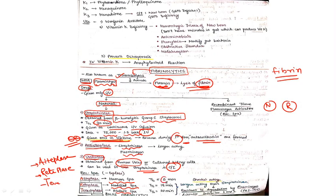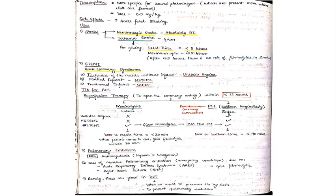Tenecteplase is more specific for bound plasminogen and the dose is 0.5 mg per kg. Side effects include acute vital bleeding.